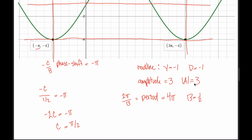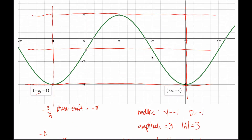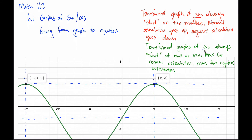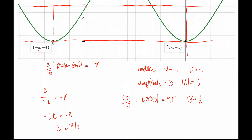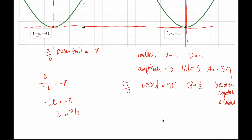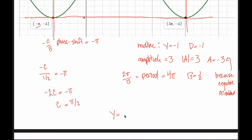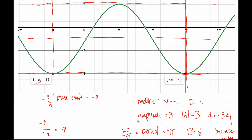All that's left is figuring out whether a is positive or negative, and whether to use sine or cosine. Our starting point is at a minimum value. Unlike the sine graph, which always starts on the midline, the cosine graph starts at the maximum or minimum. It starts at the minimum when I have the negative orientation. So I'll use cosine, and because the orientation is backwards, a = negative 3. My final answer is: y = −3·cos((1/2)x + π/2) − 1.